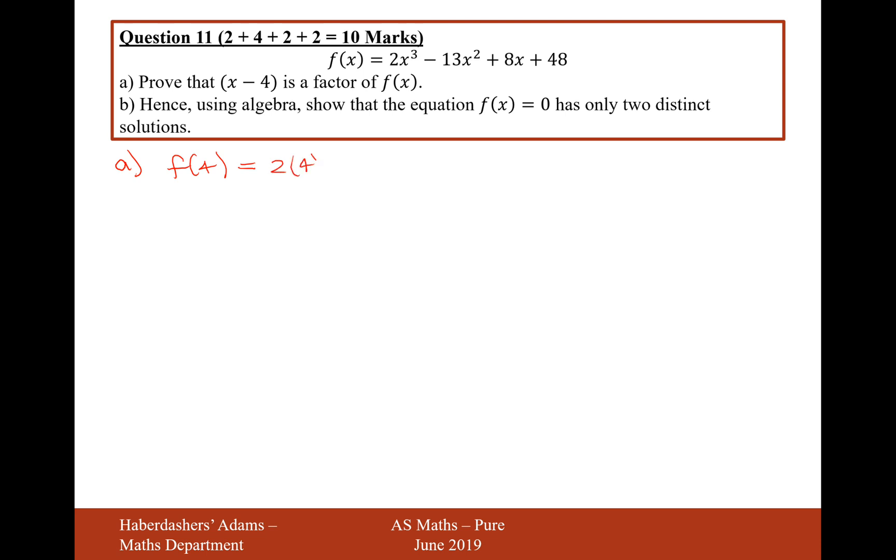So, it's going to be 2 times 4 cubed minus 13 times 4 squared plus 8 times 4 plus 48. Let's now work out what each of these are individually because they should add together to make 0. The first one is going to be 128. The second one is going to be 13 times 4 squared. That would be 208 plus 32 plus 48. And if we add these together, we make 0.